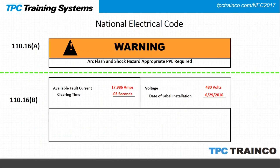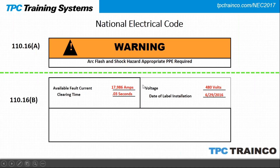An example label shows the difference: the top portion is the generic label we've always had under 110.16 — 'arc flash and shock hazard, appropriate PPE required' — but without specifying what PPE. The bottom portion under new 110.16B now includes the available fault current (requiring knowledge of transformer size, impedance, and voltage), the clearing time from the manufacturer, and the date the label was applied. This information can help initiate an incident energy analysis or select the correct PPE category to protect qualified workers.